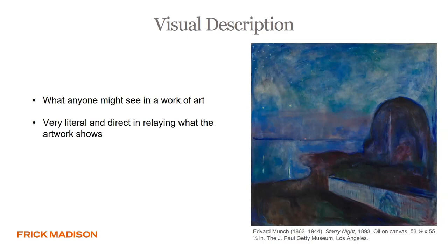Starting with Edvard Munch's Starry Night as an example, we can see that there are gestural strokes in the sky and that this is clearly a watery landscape in which the dark, starry sky is reflected in the water. But we can't make assumptions about what this abstract mound in the middle ground on the right is, nor what this rectilinear form that juts into the picture plane from the lower right corner might be.